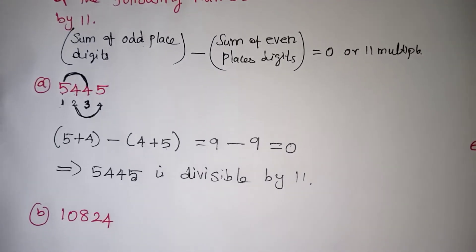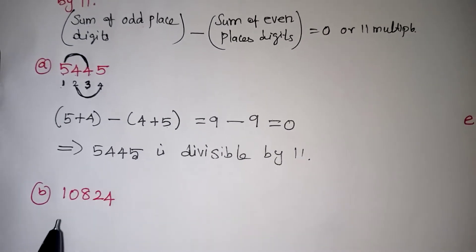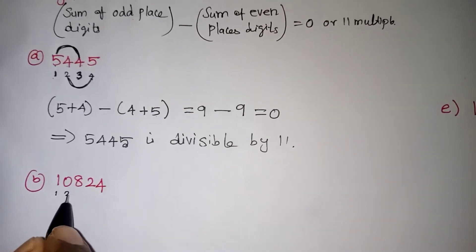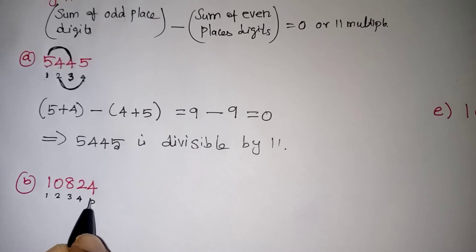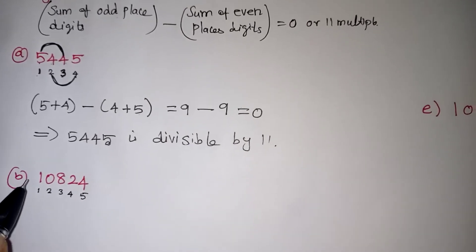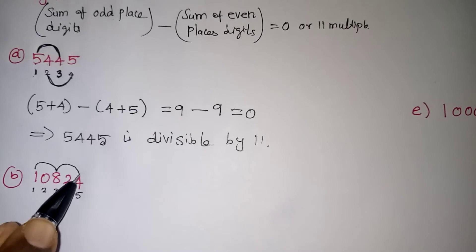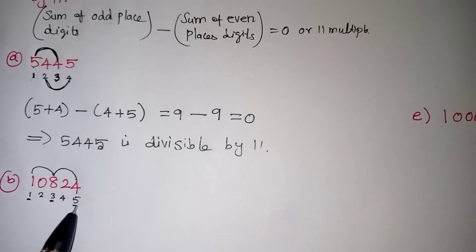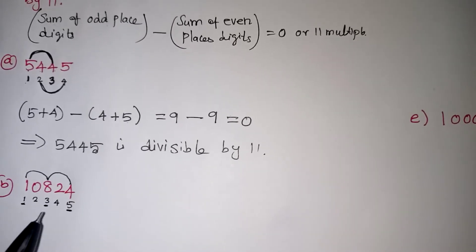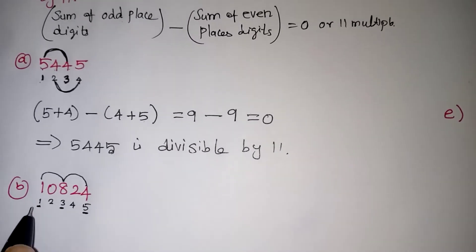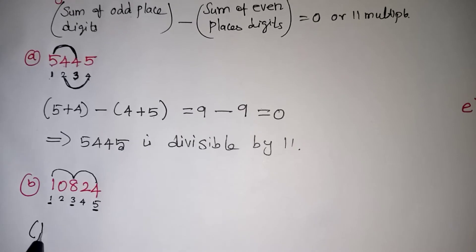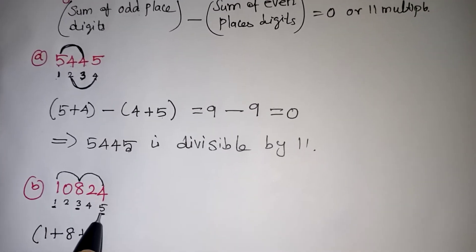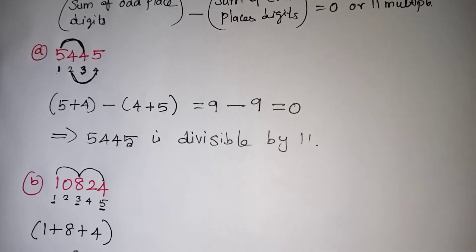We will move on to the next problem. Whenever you see the question, start by numbering the digits: first place, second place, third place, fourth place, fifth place. My odd places are 1, 3, and 5. So I have to take the first number, the third number 8, and the fifth number 4, and add them separately for odd places.